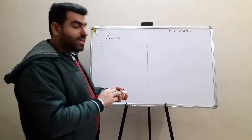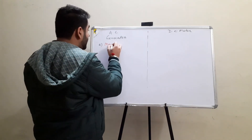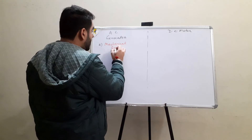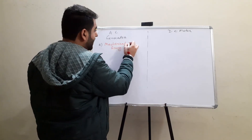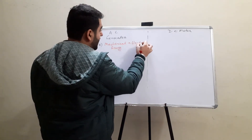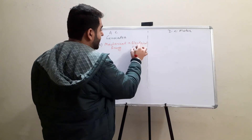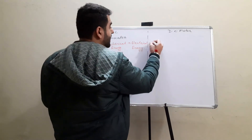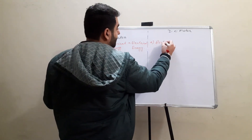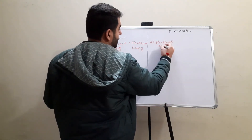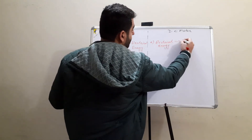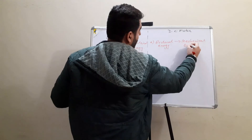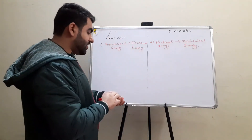The first difference is energy conversion. An AC generator is a device in which mechanical energy is converted into electrical energy, whereas in a DC motor, electrical energy is converted into mechanical energy.